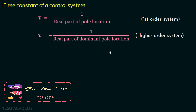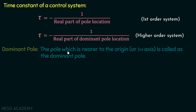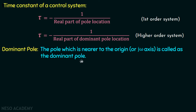Now let us first understand the meaning of dominant pole. The pole which is nearer to the origin or j-omega axis is called the dominant pole. So in a higher order system where the number of poles is greater than 1, the pole which is nearer to the origin or the j-omega axis is called the dominant pole.